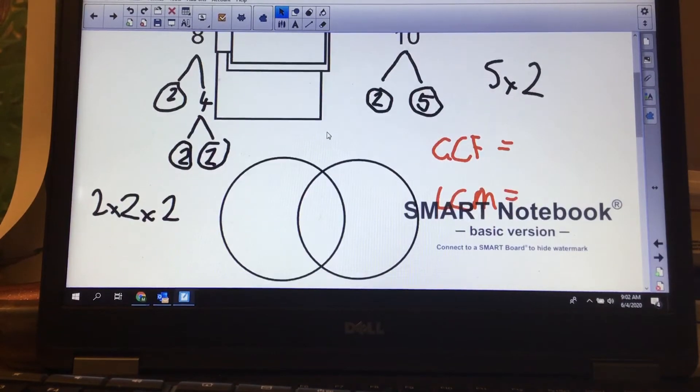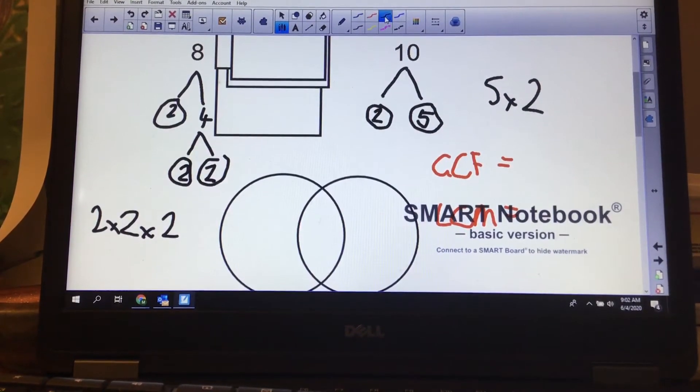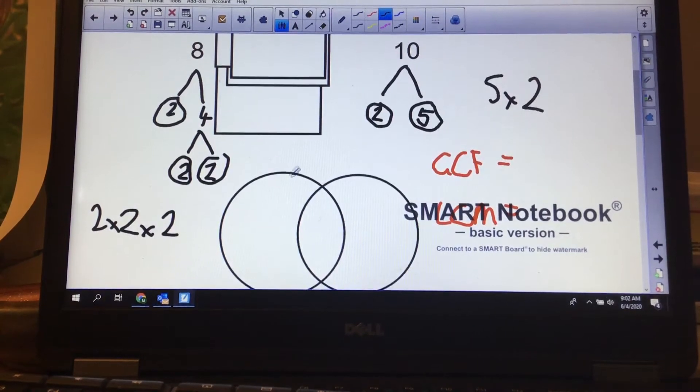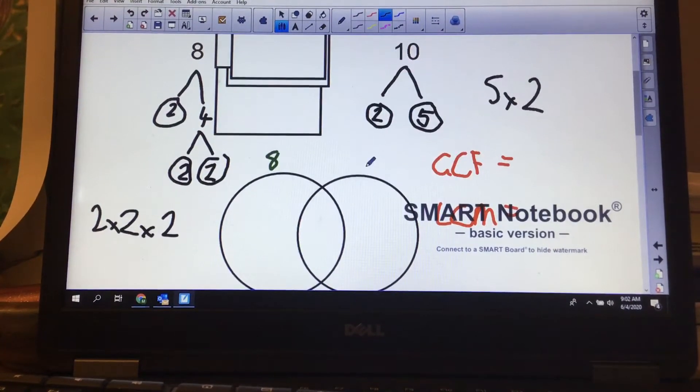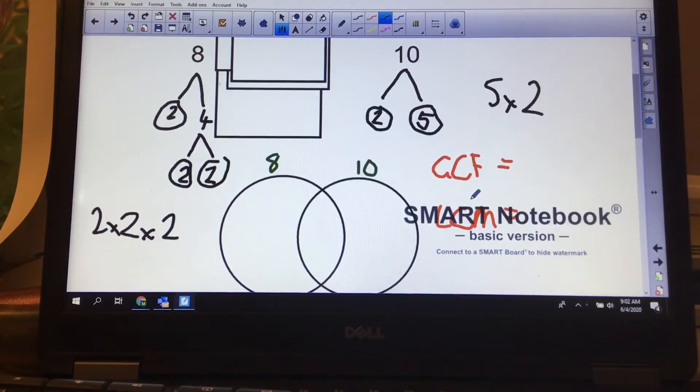So how this now works, watch carefully. I've got a Venn diagram. On one side I have my factors of 8, my prime factors of 8. On the right I have my prime factors of 10.